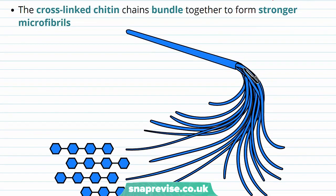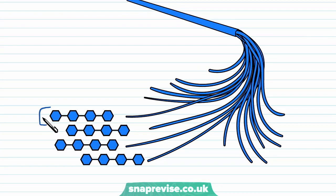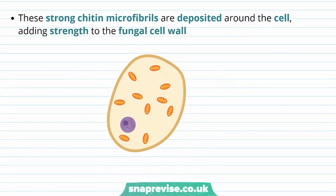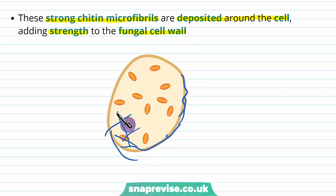We find this hierarchical structure, just as with cellulose. The cross-linked chitin chains all bundle together to form stronger structures known as microfibrils. Each microfibril is made up of individual N-acetylglucosamine chains bundled together into a wound-up structure. Overall, each of these strong chitin microfibrils is deposited around the cell to form the cell wall, adding strength and shape to the whole fungal cell. Imagine all of those microfibrils spanning the wall of the cell in multiple directions — up and down, side to side, criss-crossing over each other — forming a very strong structure for the cell.